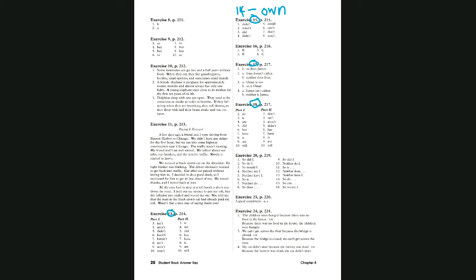Number six: 'hasn't.' Number eight: 'isn't.' Number nine: 'aren't.' Number ten: 'won't.' Those are all the negatives. The affirmative responses in part two: number three 'is,' number four 'are,' number five 'did,' number six 'has,' number seven 'have,' number eight 'is,' number nine 'are,' and number ten 'will.' If you don't know why any answer is what it is, turn on your microphone and ask.